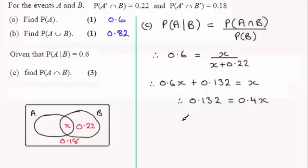Divide both sides by 0.4 and that gives me X. X is going to be 0.132 divided by 0.4 and that comes to 0.33. Therefore the probability of A and B, or A intersected with B, is 0.33.